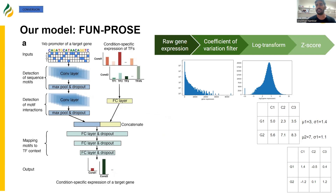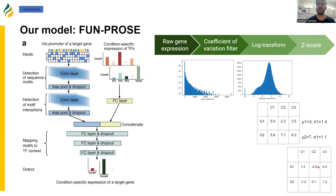The hope is that these convolutional layers will extract motifs that are relevant to TF binding. For our expression levels that we predict, we first run the raw gene expression through coefficient of variation filters because we don't want to predict expression levels of genes that don't vary across different conditions. We also perform z-scoring so that for each gene we end up with a distribution with a zero mean and standard deviation of one, so that when we're predicting condition-specific expression, we're predicting differential expression with regard to that average expression level.